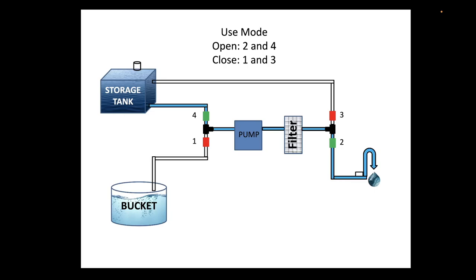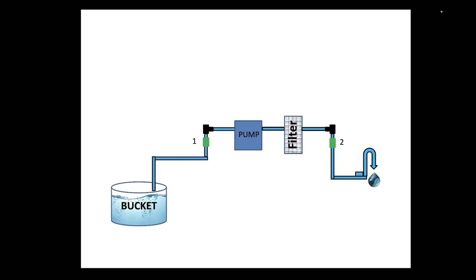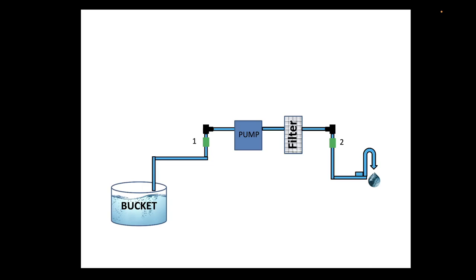Then of course you got the last mode I'll show you, the bonus mode. If you remember our original system when we had the original source, pump, and then your faucet, now imagine having this bucket underneath the faucet and then further imagine if you had this bucket a little bit larger and have it be a shower pan and then have the faucet be a shower head. We can turn the system into a recirculating shower system.